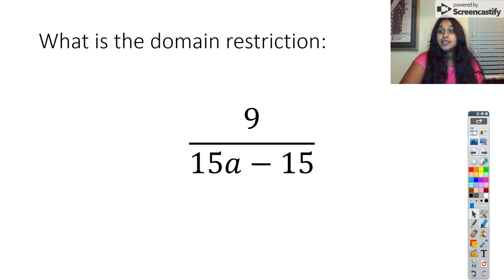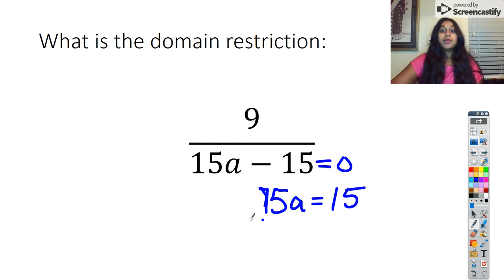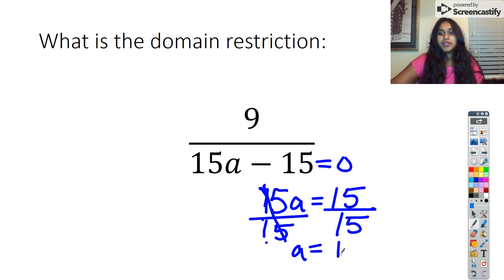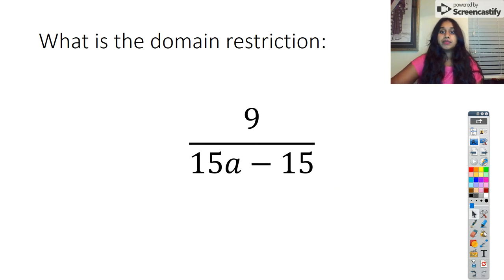The next question is another domain restriction. All I have to do is look at the denominator and set it equal to zero. So 15A is equal to positive 15, and anything divided by itself will always be one. This is a restriction, so this tells me A simply cannot equal one. It exists everywhere else except at one.